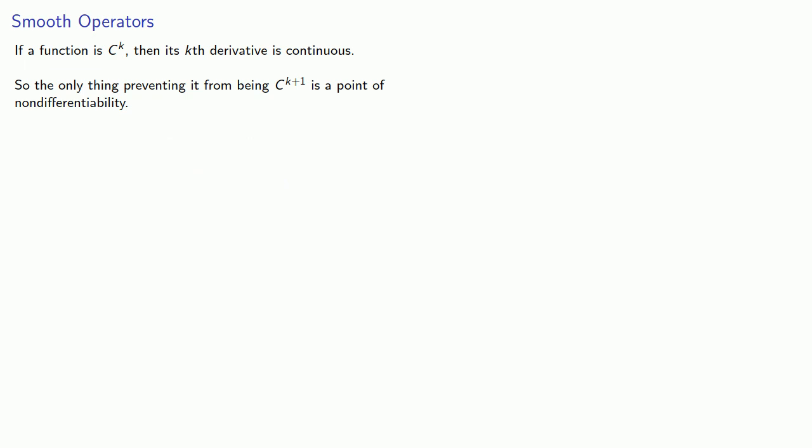On a continuous function, this is usually because the graph has a cusp or a corner. So intuitively, a smooth function has no corners.